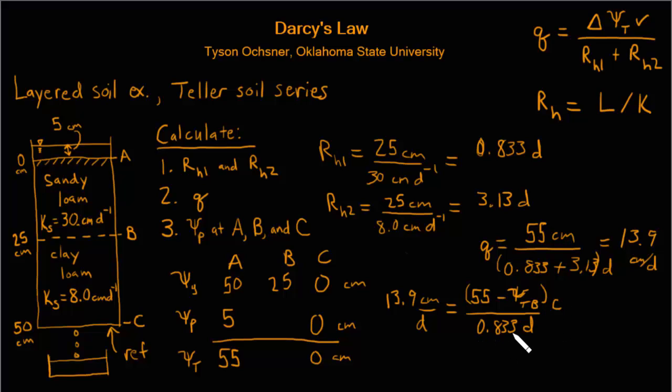So this just takes some algebra. We're going to multiply by 0.833 to this side, and then subtract off 55 and take the negative. When we solve that, we'll find that the total potential at point B has to be equal to 43.4 centimeters of water.